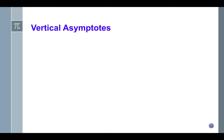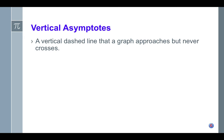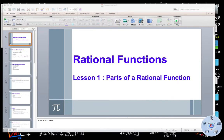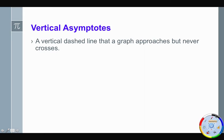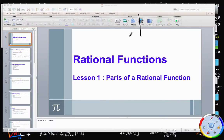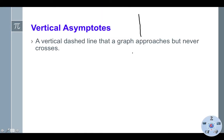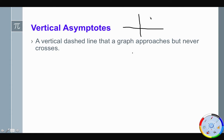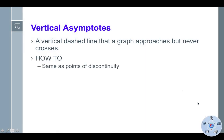A vertical asymptote is graphically a vertical dashed line that a graph approaches but never crosses. From our in-class discussion, we looked at a graph that looked like this, where we had this vertical dashed line and our graph got really close to it but it never touched and it never crossed. We're going to be finding those the same way as a point of discontinuity — they are the x values that make the denominator equal to zero, usually. Sometimes we get things called holes, but more often than not they are our vertical asymptotes.